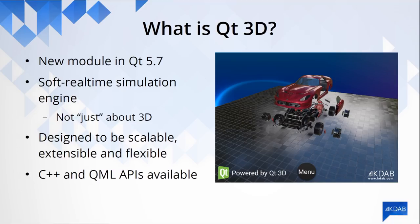Qt3D was designed to be scalable. When we design a scene in Qt3D, what we add in there is a very high-level description of what's inside our scene. This description is then used to generate a series of tasks, a series of jobs, and these jobs are run in parallel in a highly efficient thread pool, which is able to scale across all of your CPUs. Qt3D was also designed to be extensible, so you can extend what Qt3D can do. If your application requires custom simulation domains such as physics or audio, you are able to add them into the engine.